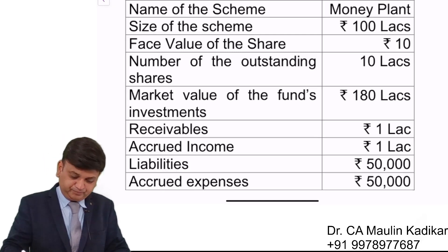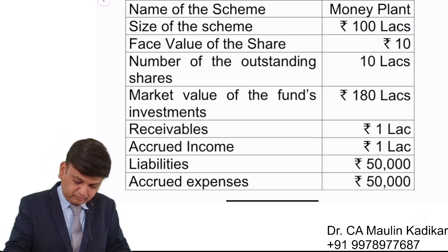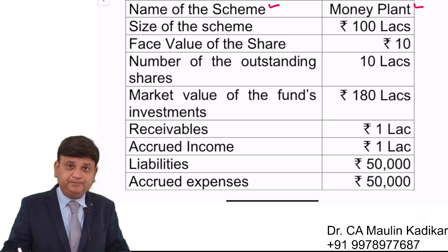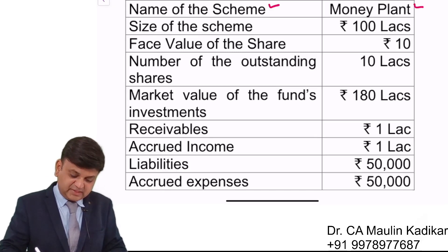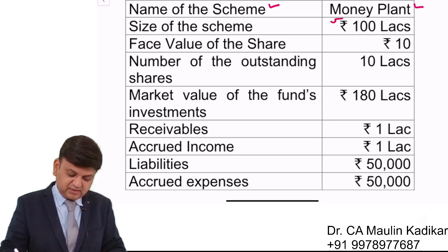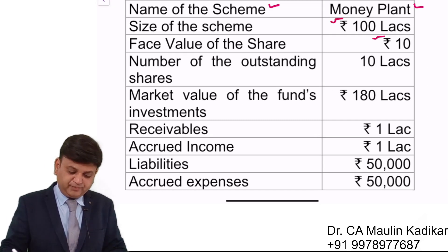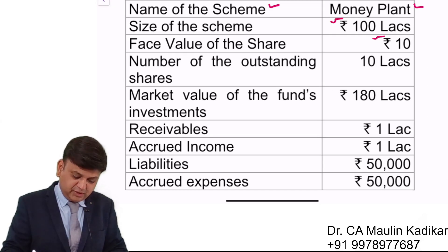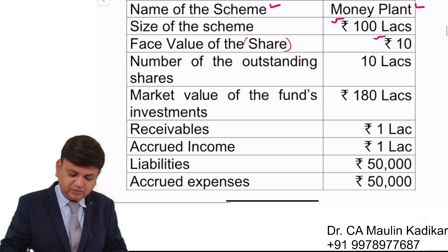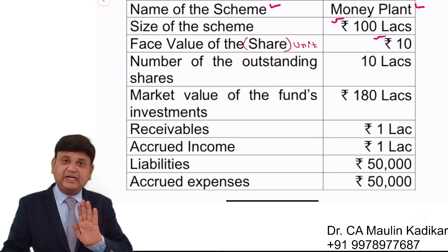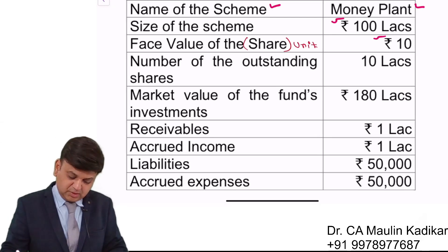The name of the scheme is Money Plant, size of the scheme is 100 lakhs, and face value per unit is 10. Note that the question uses the word 'share' but it should be 'unit', and similarly 'outstanding shares' should be 'outstanding units'.